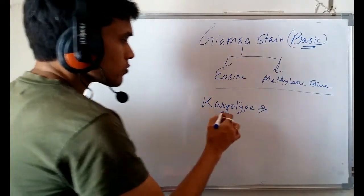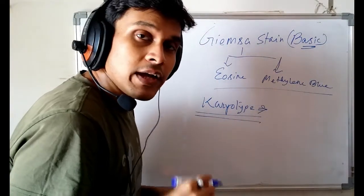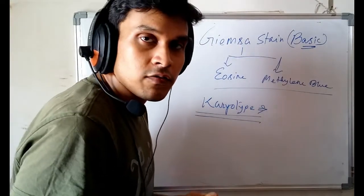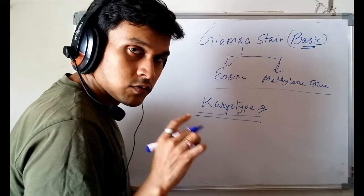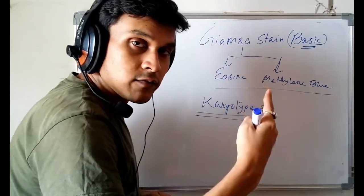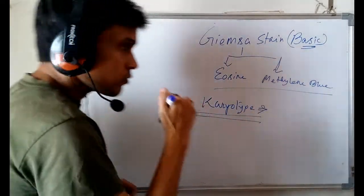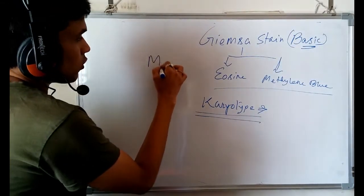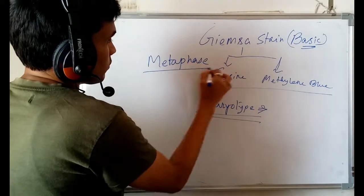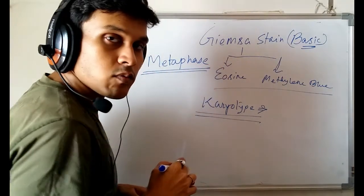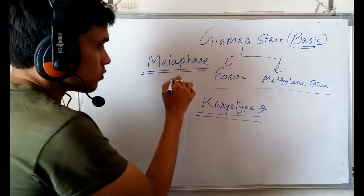To do karyotypic analysis, you need to get the condensed structure of a chromosome. So from which state of the cell can you get the condensed structure? During cell division, if you consider the metaphase stage, the chromosome is condensed.